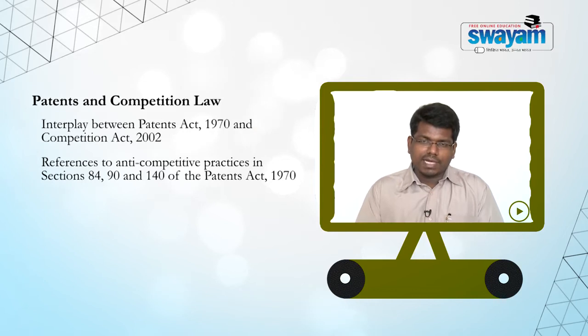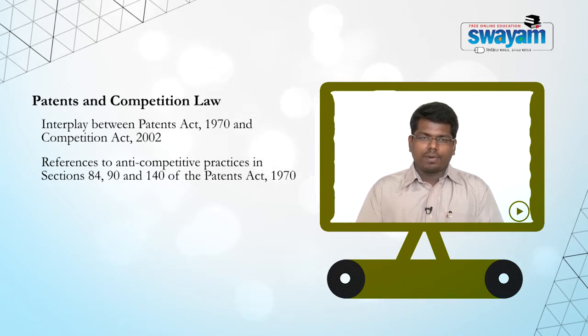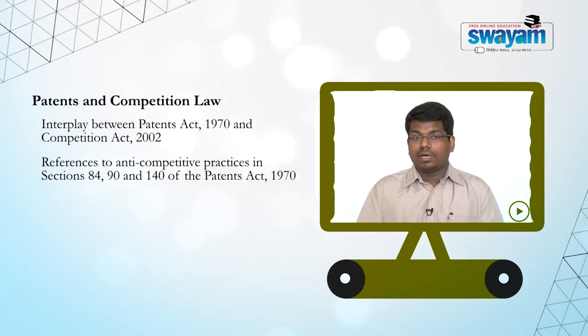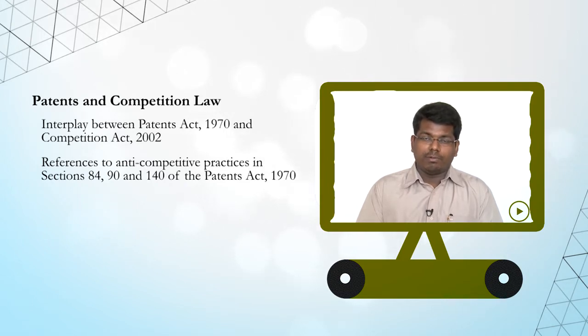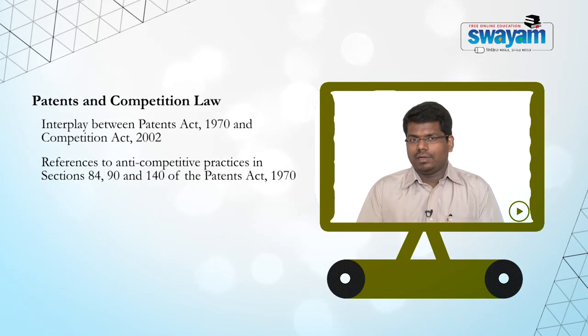Importantly, there is no express provision in the Patents Act declaring that the Controller of Patents shall have the right to adjudicate on these issues, nor is there an exclusion of the Competition Act's applicability insofar as these provisions are concerned. Since there is no exclusion of the Patents Act from the Competition Act, one could legitimately conclude that insofar as anti-competitive practices of a patentee are concerned, it shall be the Competition Act and therefore the Competition Commission that shall exercise jurisdiction. This feeds into an ongoing debate on conflict of jurisdiction between the Controller of Patents and the Competition Commission.